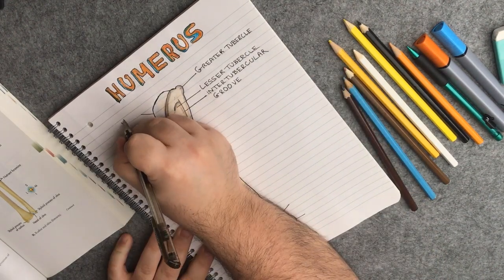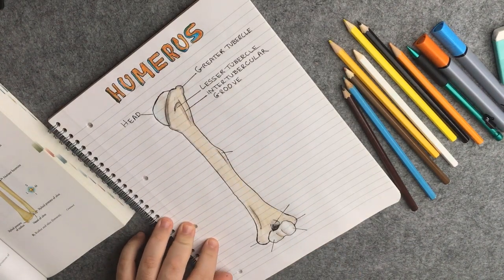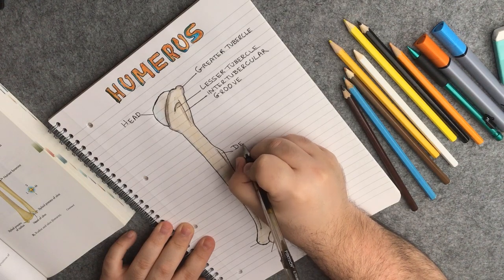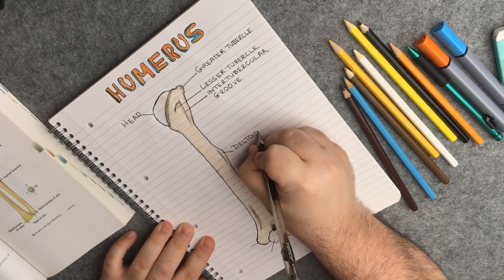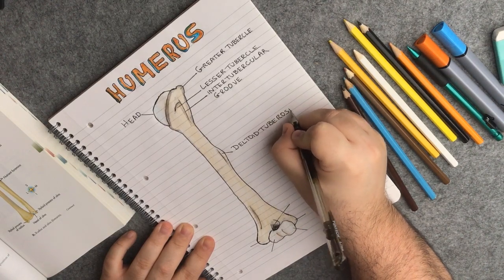On the left side of this image, I will write head for the head of the humerus, which is the part of the bone that is connected to the scapula and forms the shoulder joint. Further down, the deltoid tuberosity, where the deltoid muscle attaches to.